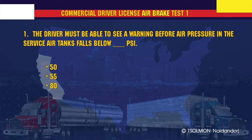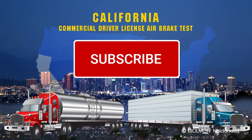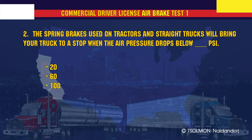The driver must be able to see a warning before air pressure in the service air tanks falls below 55 PSI. The spring brakes used on tractors and straight trucks will bring your truck to a stop when the air pressure drops below 20 PSI.